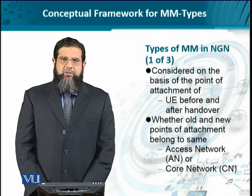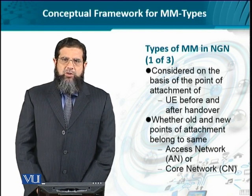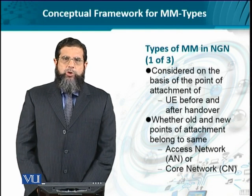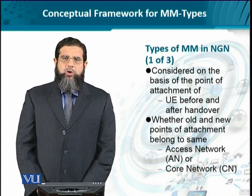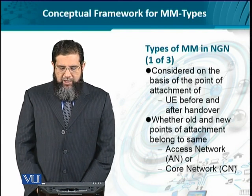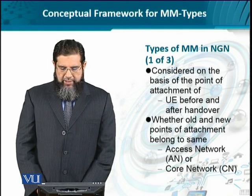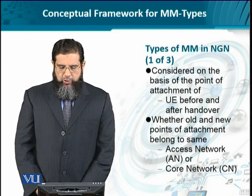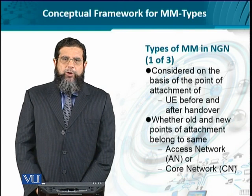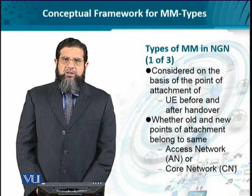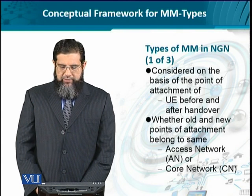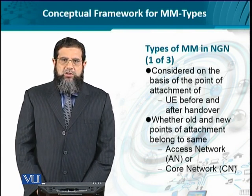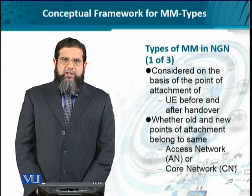Any variation of the connectivity that happens while the device is mobile determines the mobility type. We say that the point of contact is going to change for a user equipment — if it changes significantly, then mobility management has to be invoked or activated. So depending upon the point of contact to the network by a user equipment, the change in the point of contact in terms of scope or magnitude determines the type of mobility. This point of contact is considered to change either at the access network level or at the core network level, or we may assume that the point of contact does not change.